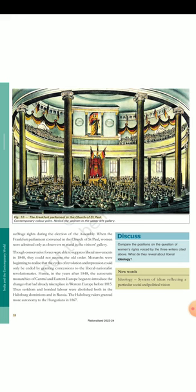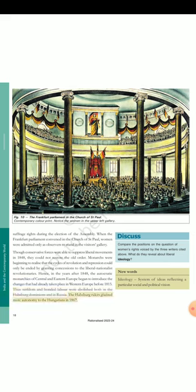Fig. 10: The Frankfurt Parliament in the Church of Saint Paul. Contemporary color print. Notice the women in the upper left gallery. Compare the positions on the question of women's rights voiced by the three writers cited above. What do they reveal about liberal ideology? Discuss. New words — Ideology: system of ideas reflecting a particular social and political vision. When the Frankfurt Parliament convened in the Church of Saint Paul, women were admitted only as observers to stand in the visitors' gallery. Though conservative forces were able to suppress liberal movements in 1848, they could not restore the old order. Monarchs were beginning to realize that the cycles of revolution and repression could only be ended by granting concessions to the liberal nationalist revolutionaries. Hence, in the years after 1848, the autocratic monarchies of Central and Eastern Europe began to introduce the changes that had already taken place in Western Europe before 1815. Thus serfdom and bonded labor were abolished both in the Habsburg Dominions and in Russia. The Habsburg rulers granted more autonomy to the Hungarians in 1867.